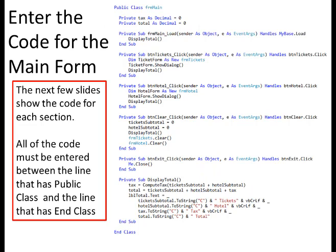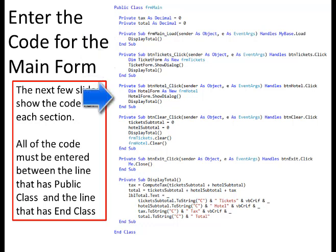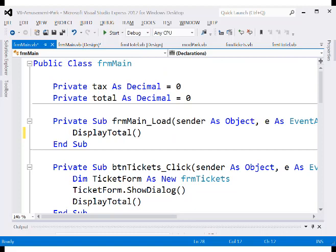Here is the code for the main form. The text is small and hard to read, so the next few slides blow up each section. The main form includes sections for private data, the load event handler, tickets clicked, hotel click, clear button click, exit button, and a display total subroutine. Double-click an unused area on the form to bring up the form main load event handler. Enter the following private variables after the public class declaration: private tax as decimal equals zero, and private total as decimal equals zero.